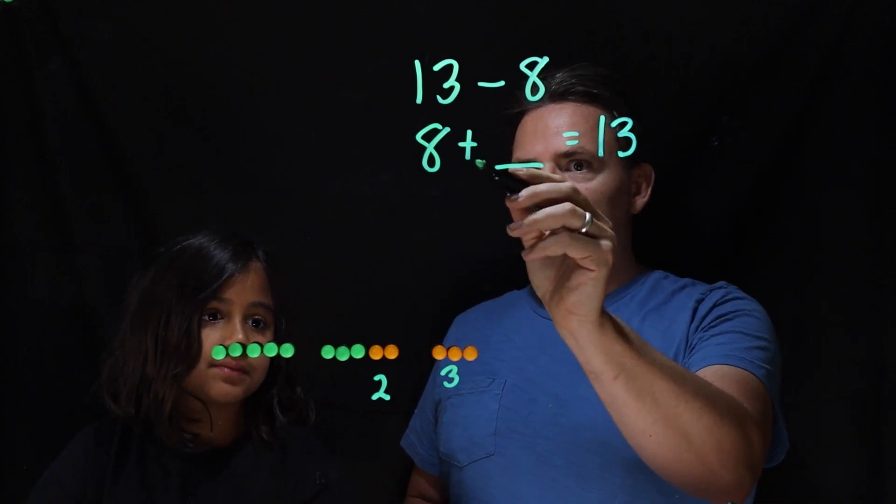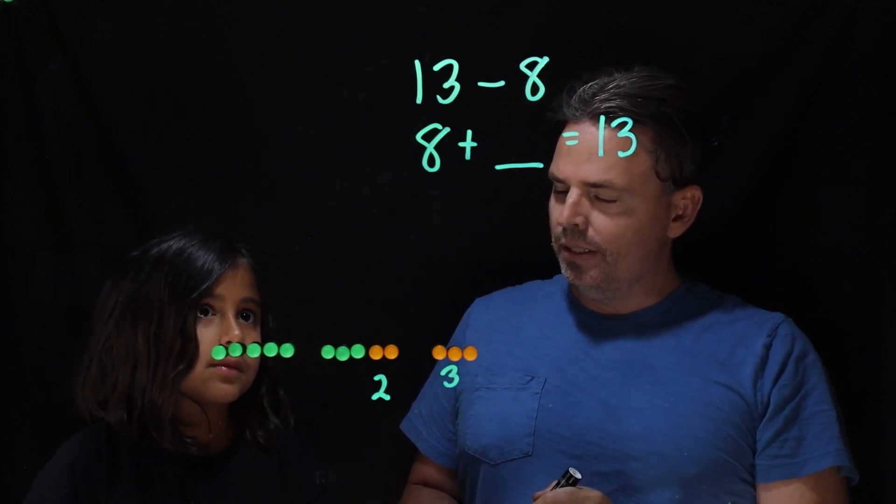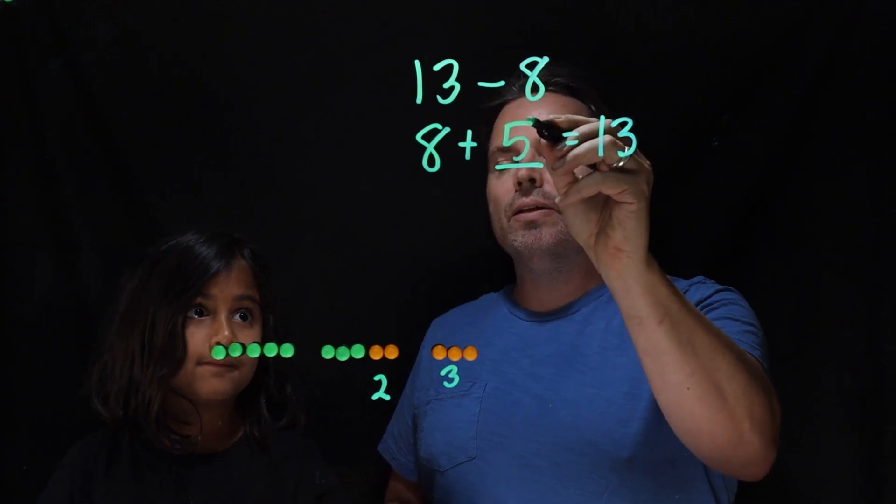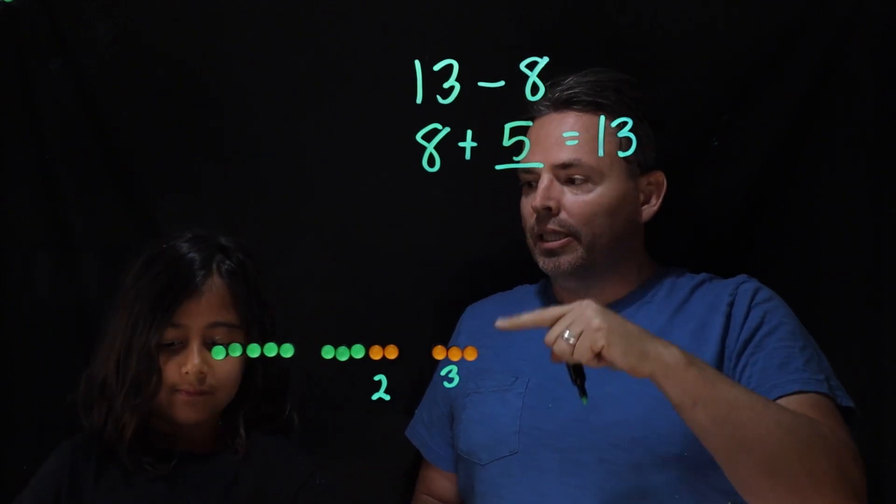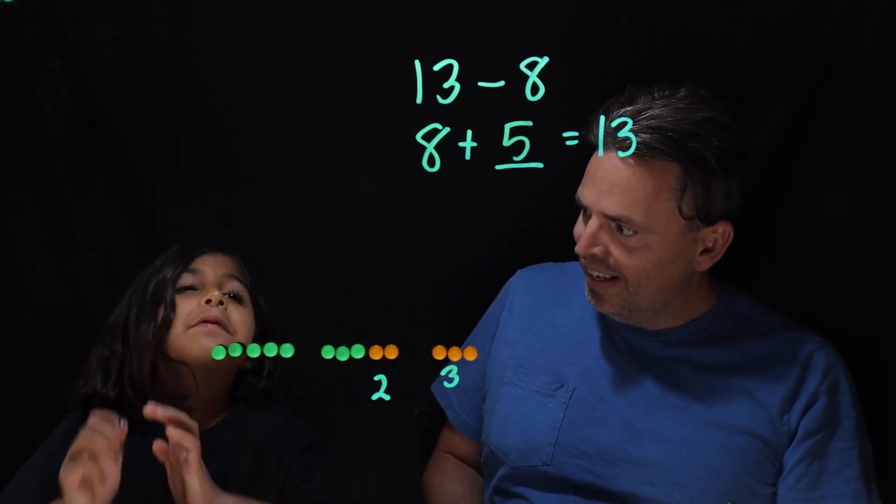So 8 plus what will give you 13? 5. 5. Okay. So does that... What does that mean? 13 minus 8 equals 5! Bye!